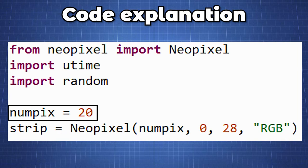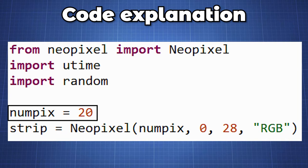We then set the number of pixels in this example, it will be 20 pixels. We then initialize our Neopixel function, setting it equal to the variable strip and we pass the number of pixels, the current state machine and our GP pin used for data which in our case was 28, and we will also be using RGB.